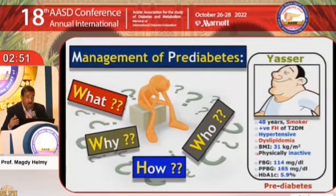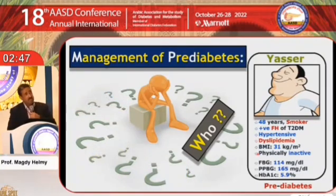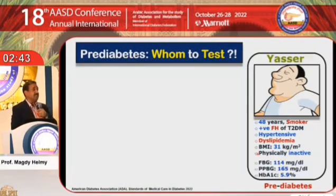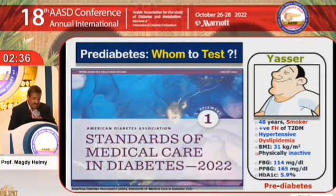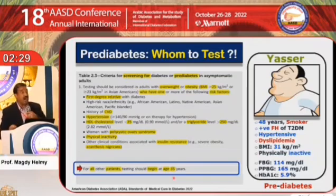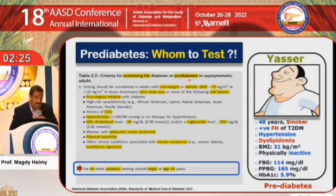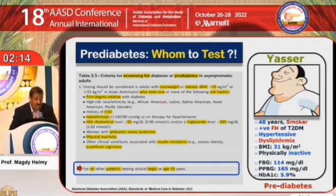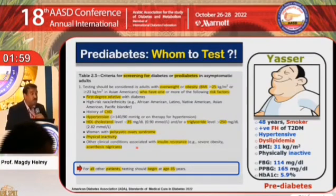The last question is who — in other words, whom should be screened to detect pre-diabetes? Should we test everyone? According to ADA guidance this year, we should screen everybody above the age of 35. We should also screen everyone regardless of age with a BMI above 25 and one or more risk factors: first-degree relative with type 2 diabetes, hypertension, dyslipidemia, physical inactivity, polycystic ovary syndrome, and features of insulin resistance such as acanthosis nigricans.